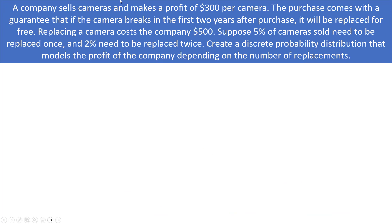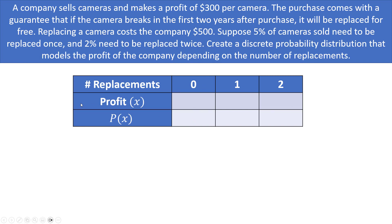Here is a business example. A company sells cameras at a profit of $300 each. The purchase includes a guarantee: if the camera breaks in the first two years it will be replaced for free, at a cost of $500 per replacement. Suppose 5% of cameras need to be replaced once and 2% need to be replaced twice. Create a discrete probability distribution modeling the company's profit based on the number of replacements.